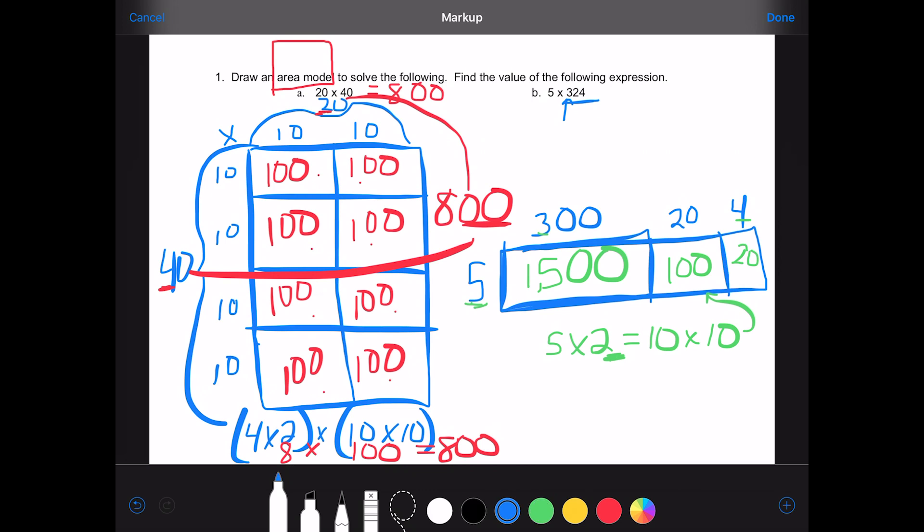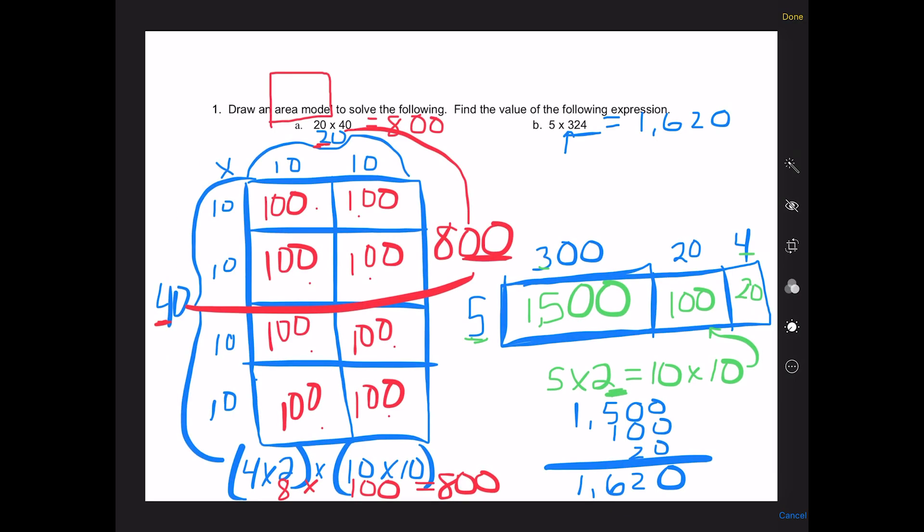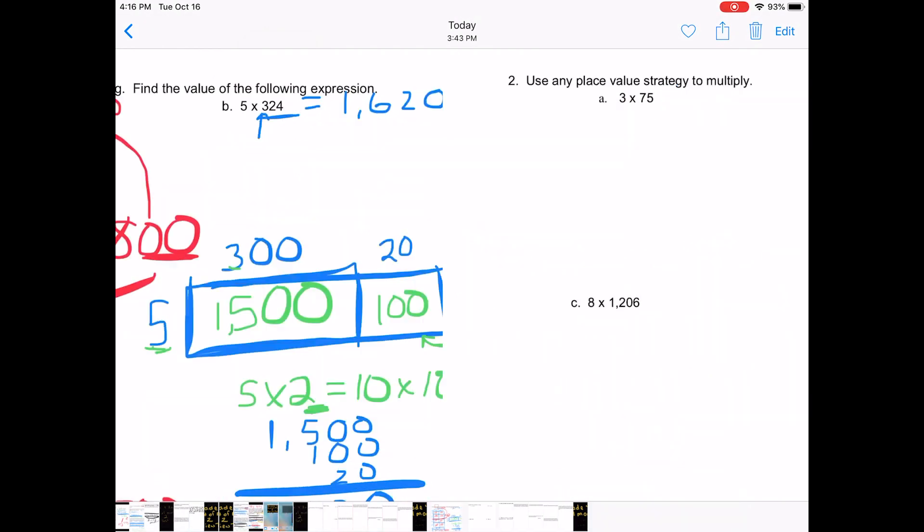So now I have the area of the three smaller boxes. I need to add them together. So I get 1,500 plus 100 plus 20, and that gives us a total of 1,620. I'll probably put it up here to make it easier for my teacher when he or she grades my paper. So that's how you do number 1.